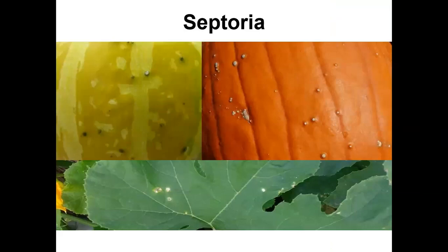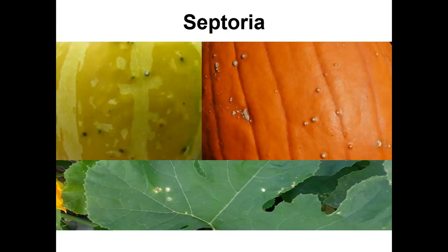Septoria causes fruit symptoms that are really quite similar to a pimple — a raised little bump, quite circular in shape, a little bit corky. If you scrape it with your fingernail, you can detach that whole little pimple bump. The leaf lesions, which are often not very obvious, tend to be very circular and straw-colored, very round, very small, like the head of a pin. Often we don't see large amounts of leaf infection. It seems to go straight to the fruit, which is why many growers choose to have preventative fungicides during fruit sizing to protect the quality of the fruit.